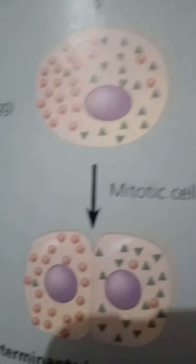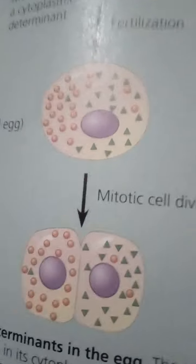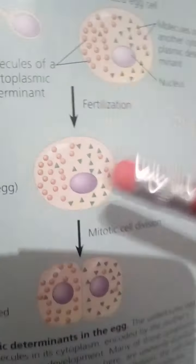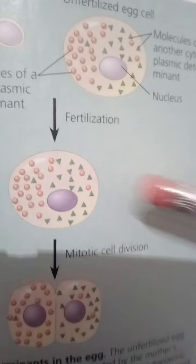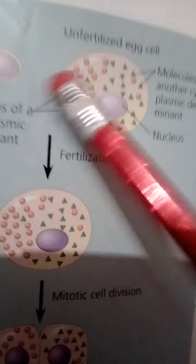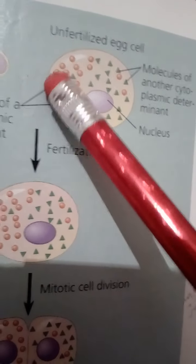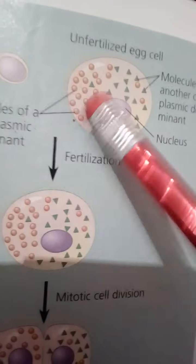Here is a diagram showing sources of developmental information for the early embryo. Notice one represents cytoplasmic determinants in the egg. Notice the sperm and fertilized egg cell. Notice the yellow or orange molecules of a cytoplasmic determinant.